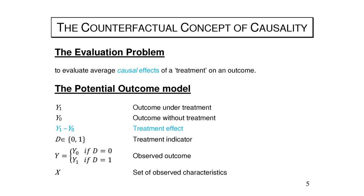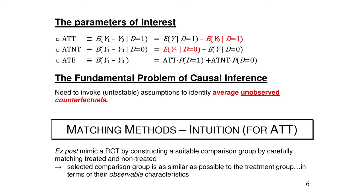We are interested in recovering average effects of participation. The first and most popular parameter is the ATT — the average treatment effect on the treated — which is the average impact of the program for those who participate. If the treatment is a degree, this would be the average return to a degree for graduates. It's the relevant parameter when treatment is voluntary and for cost-benefit analysis, and luckily it's also the easiest to identify.